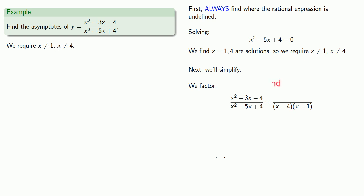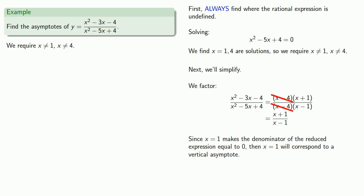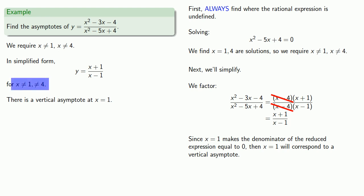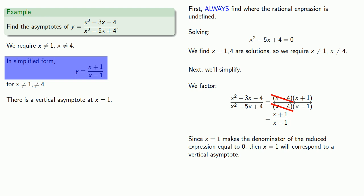After simplifying, our rational expression reduces to y equals x plus 1 over x minus 1, still for x not equal to 1 and x not equal to 4. Since x equals 1 makes the denominator of the reduced expression equal to 0, there is a vertical asymptote at x equals 1. One important idea: while we still require x can't be 1 and x can't be 4, only x equal to 1 gives us a vertical asymptote — vertical asymptotes depend only on the simplified form. As for what happened to x equal to 4, to answer that question, you'll have to take calculus.